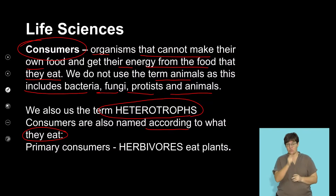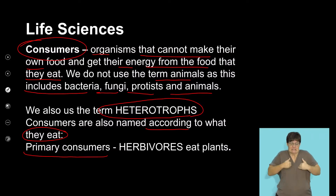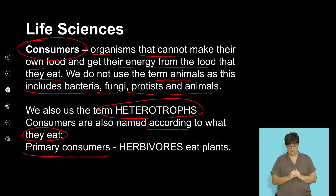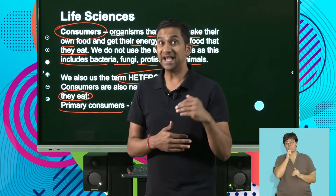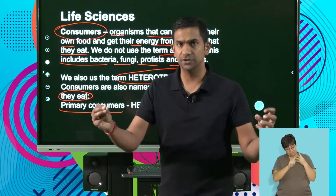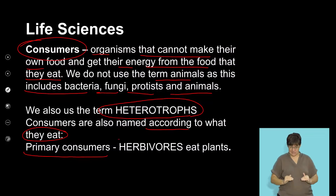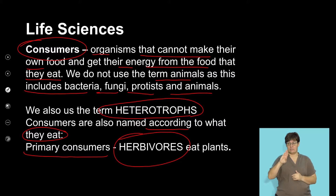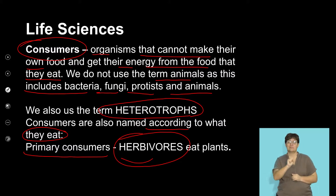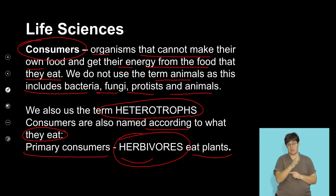Let's look at our primary consumers. The word primary indicates the first level of consumers. We have different levels of consumers accessing energy at different points in a food chain. The first level of consumers are your herbivores. The word herbivore essentially comes from herbs, which refers to plant diet, so these are individuals that consume plant material.